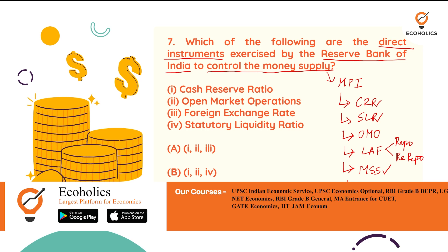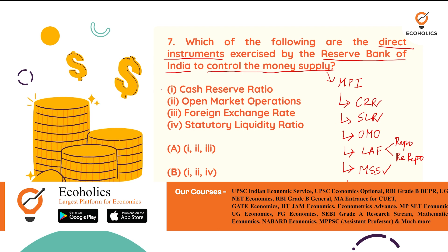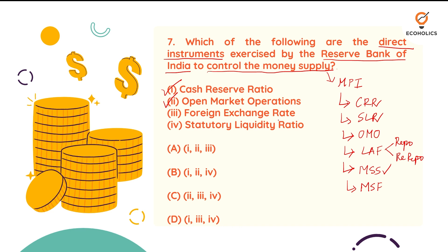Looking at the options: cash reserve ratio is present, open market operations is present, and statutory liquidity ratio is present — so options one, two, and four. But what about foreign exchange rate as option three? If you look at the given answer combinations, they only offer combinations of three options. Since one, two, and four are already confirmed, B is the correct answer.